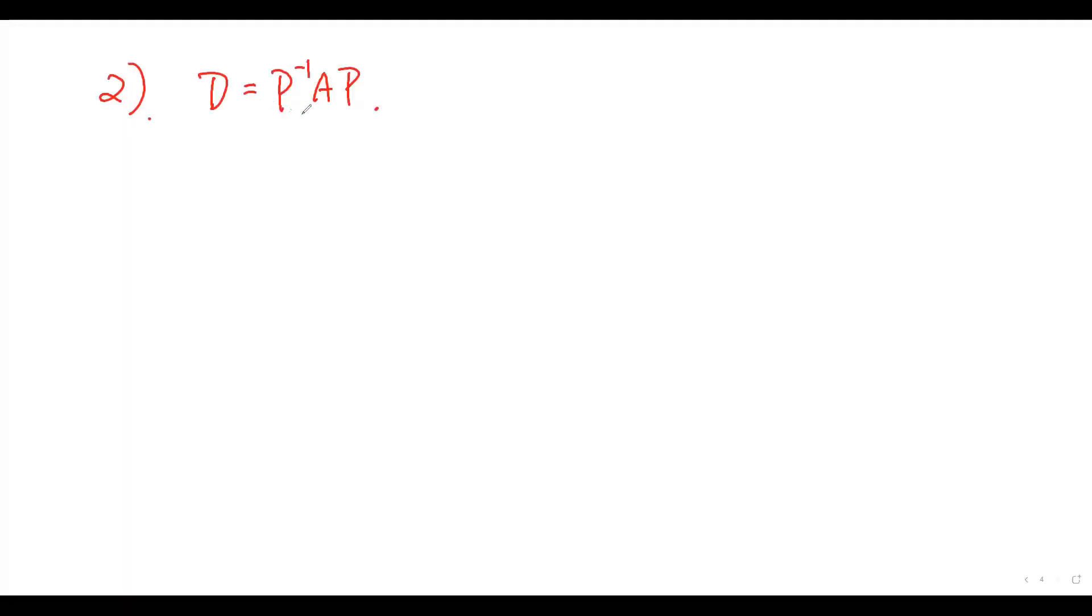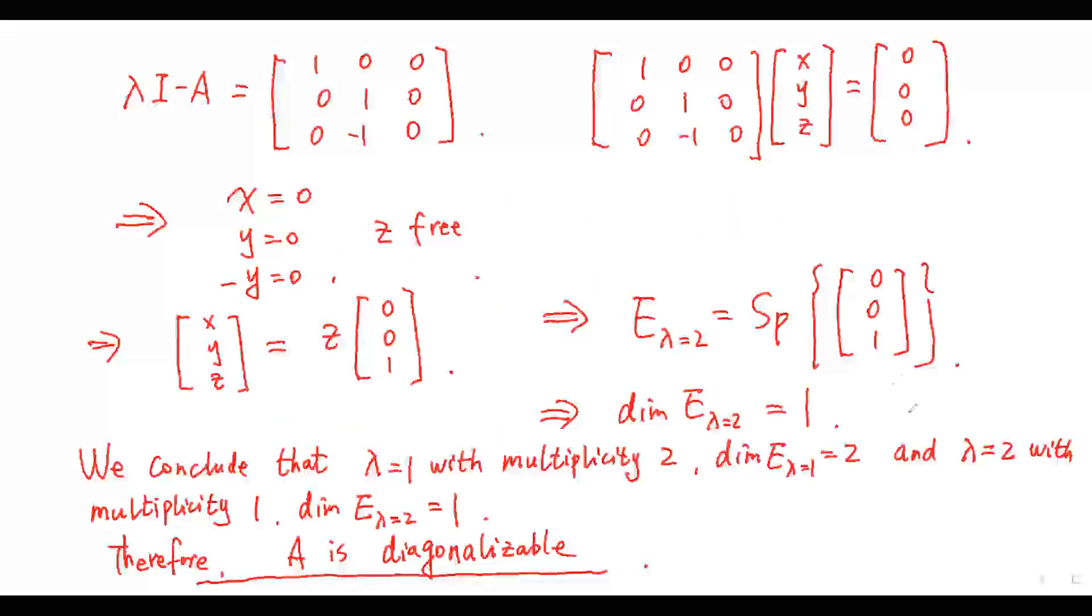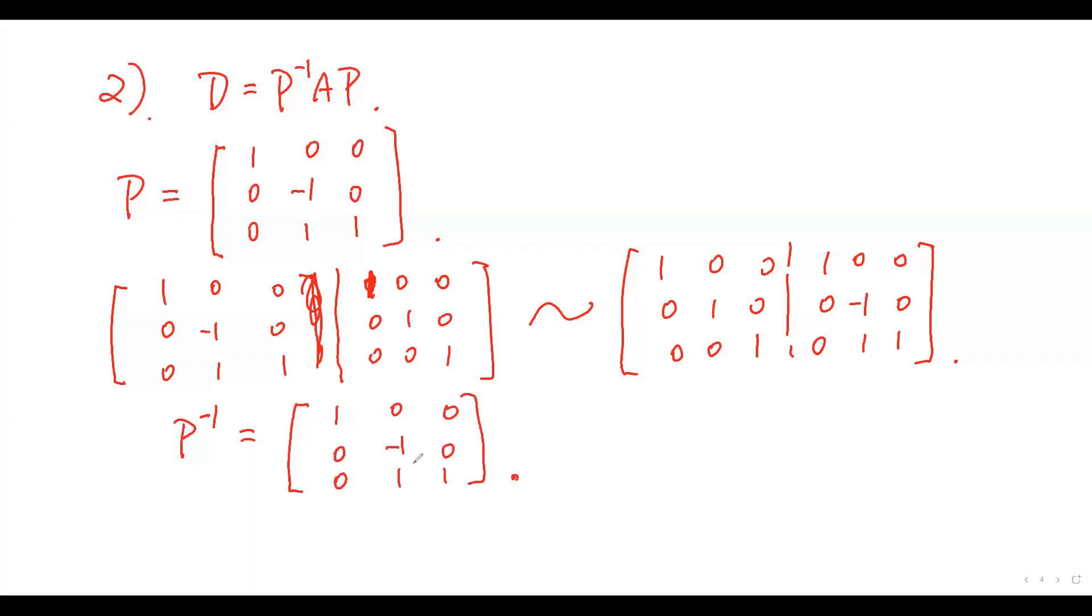Question 2. We should find the matrix P such that P inverse times A times P equals a diagonal matrix D. P is given by the vectors: 1, 0, 0; 0, minus 1, 1; and 0, 0, 1. So it is this one. From these operations, we find the inverse of P equals this one. And the inverse P times A times P equals a diagonal matrix D. Thanks for watching.